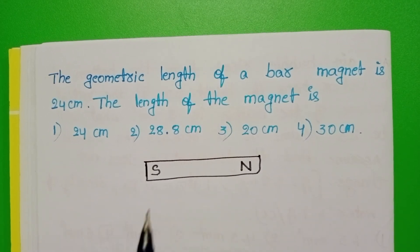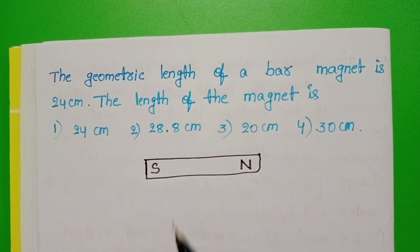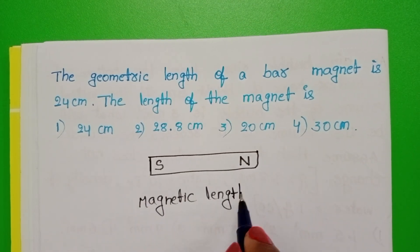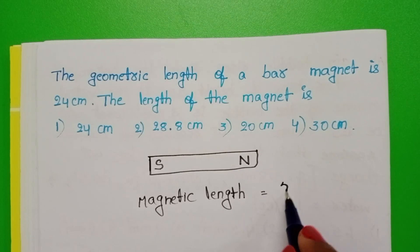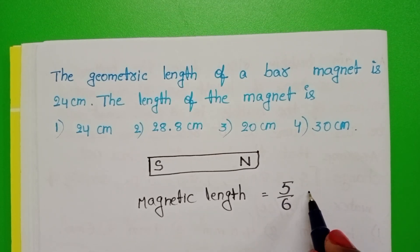The relation between magnetic length and geometric length is 5 by 6 times the geometric length.